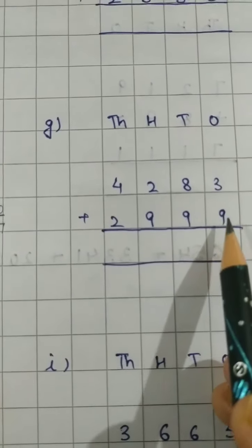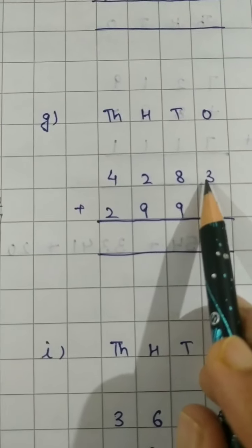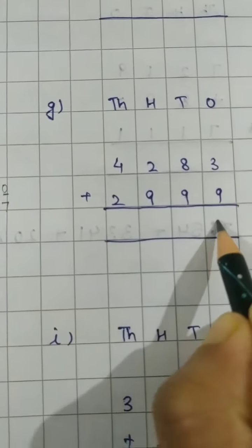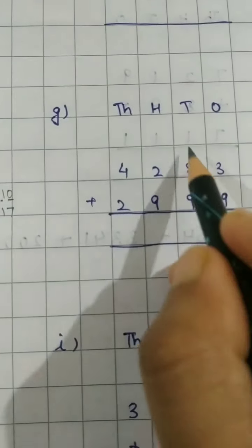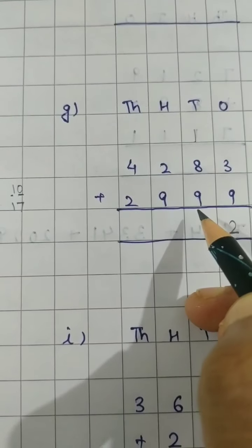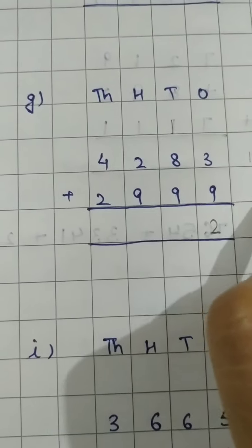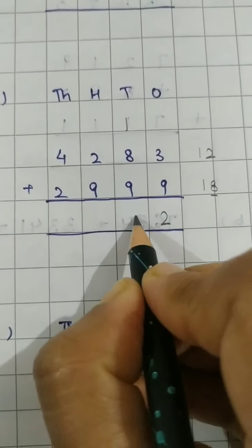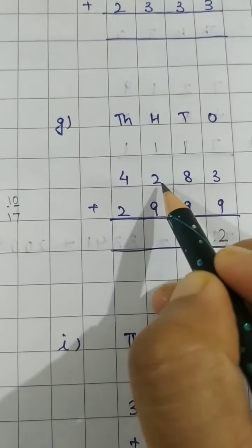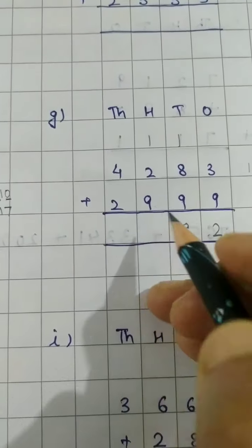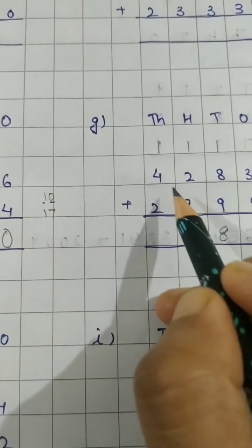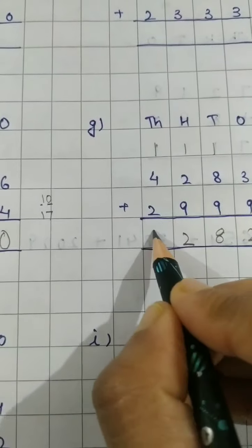G part. Here 9 plus 3. When you will add 9 and 3 you will get 12. 2 we will write in ones place and 1 will be the carry over. Then 8 plus 1, 9. 9 plus 9, 18. 8 you will write in tens column and 1 will be the carry over. Now 2, 1, 3. 3 and 9, 12 again. 2, 1 will be the carry over. Now 4 plus 1, 5. 5 plus 2, 7.